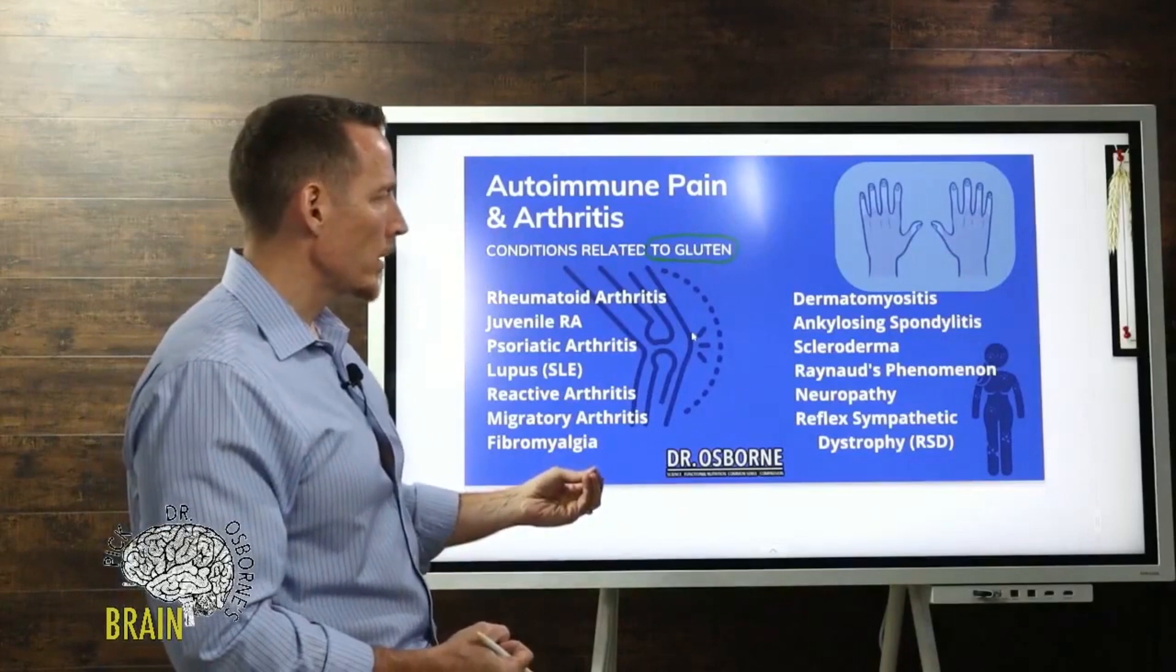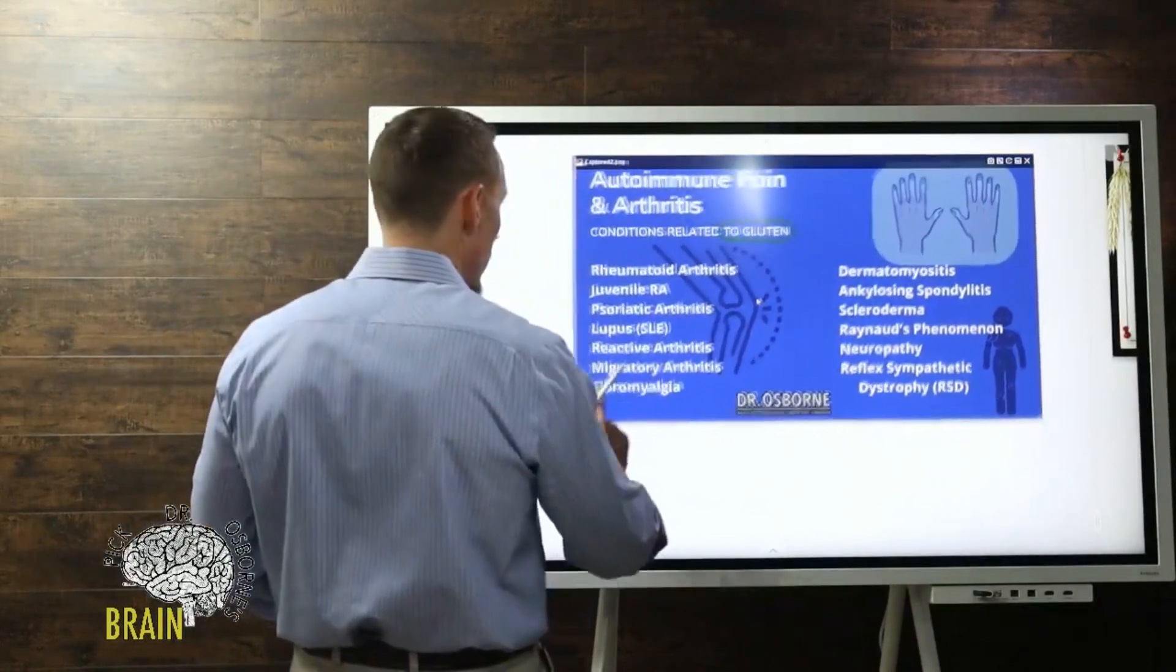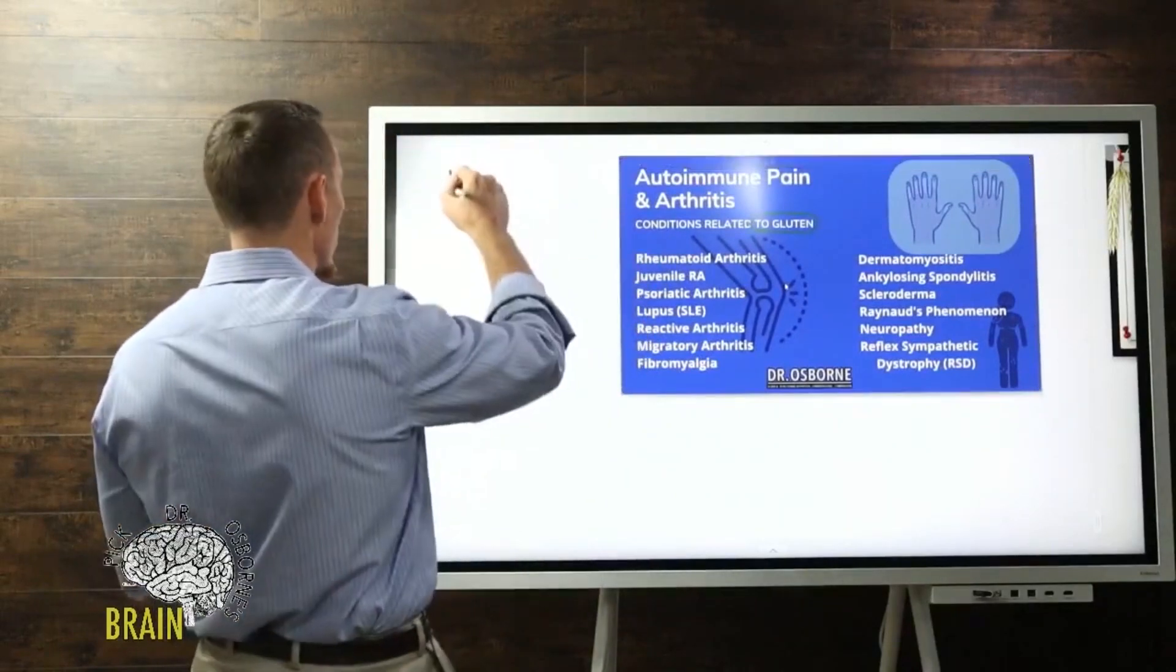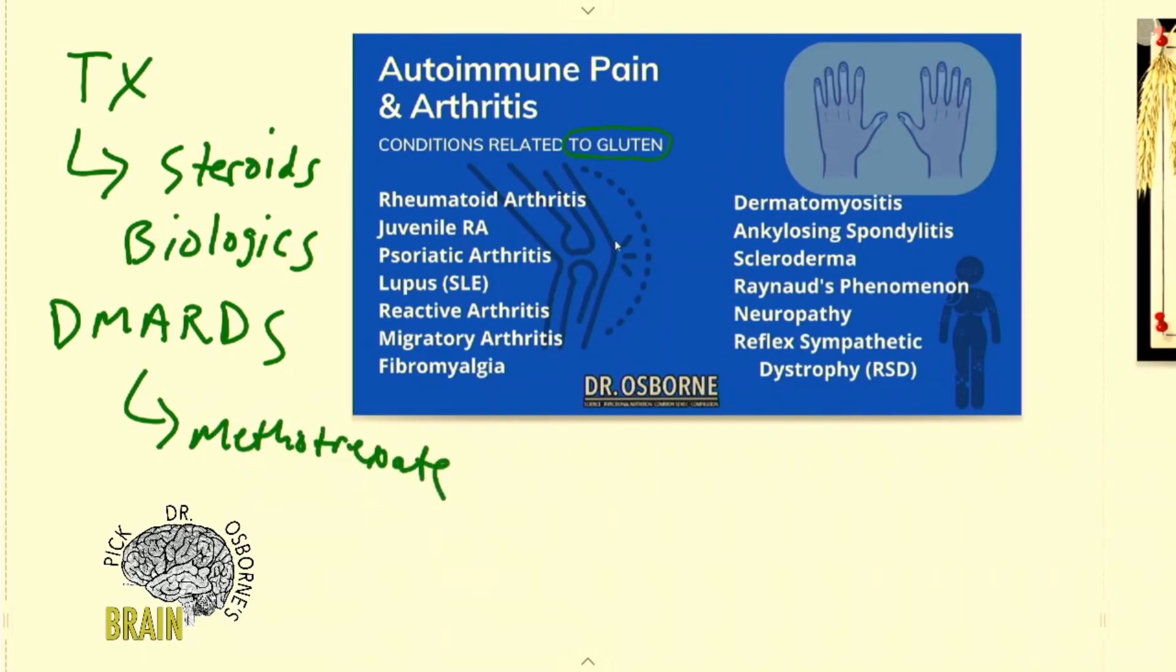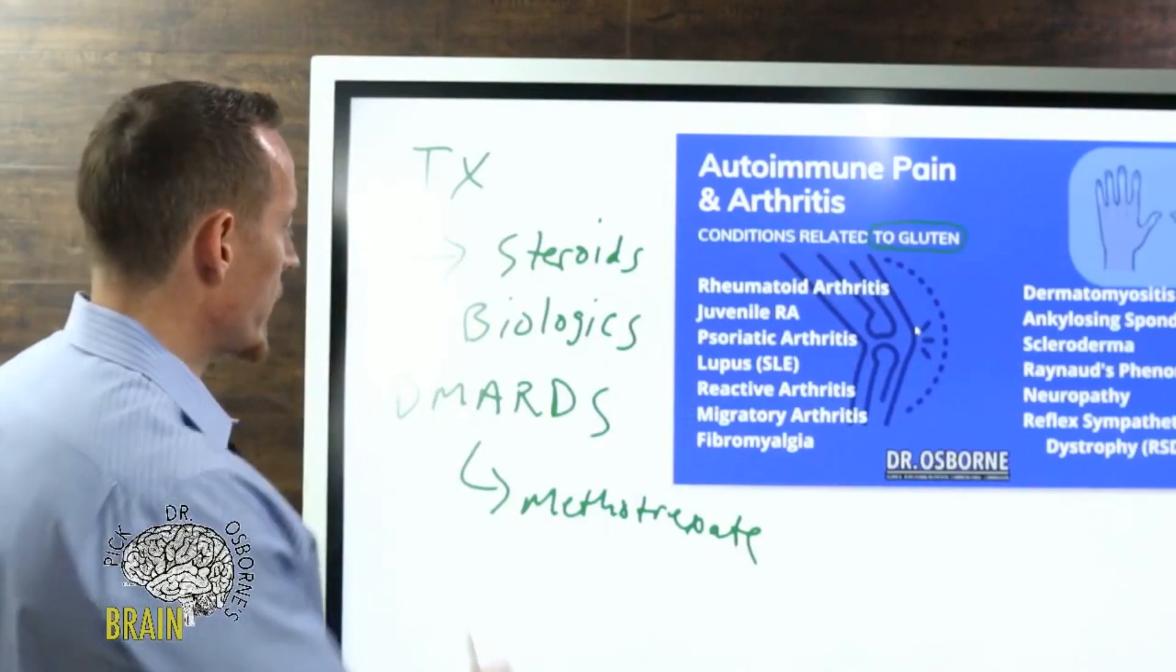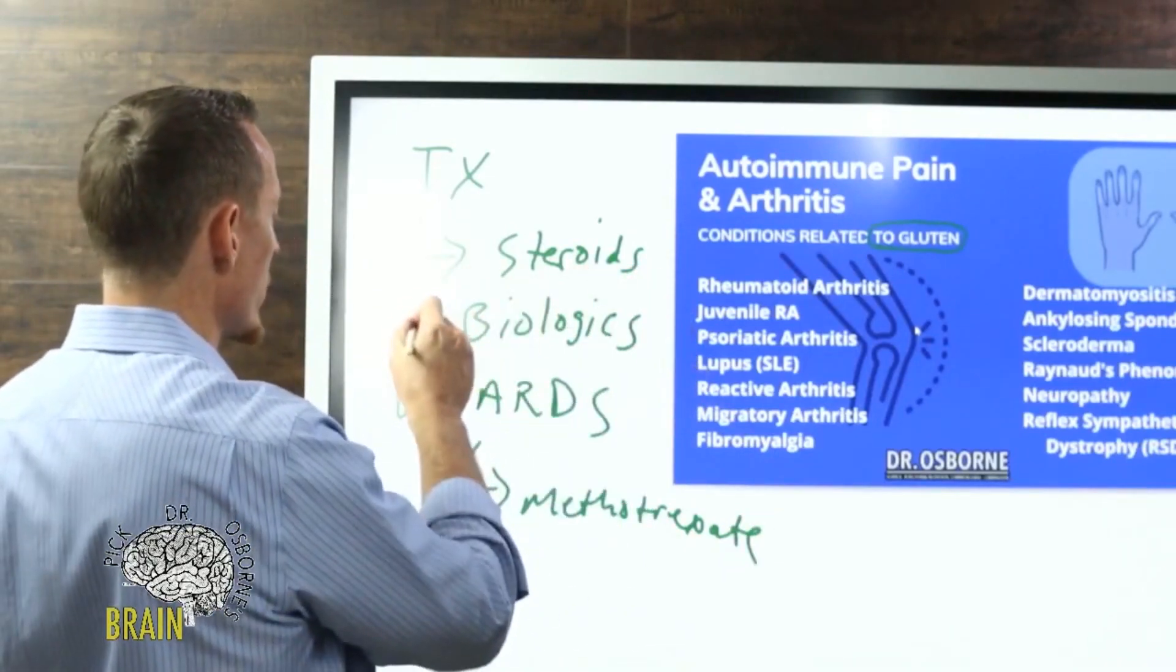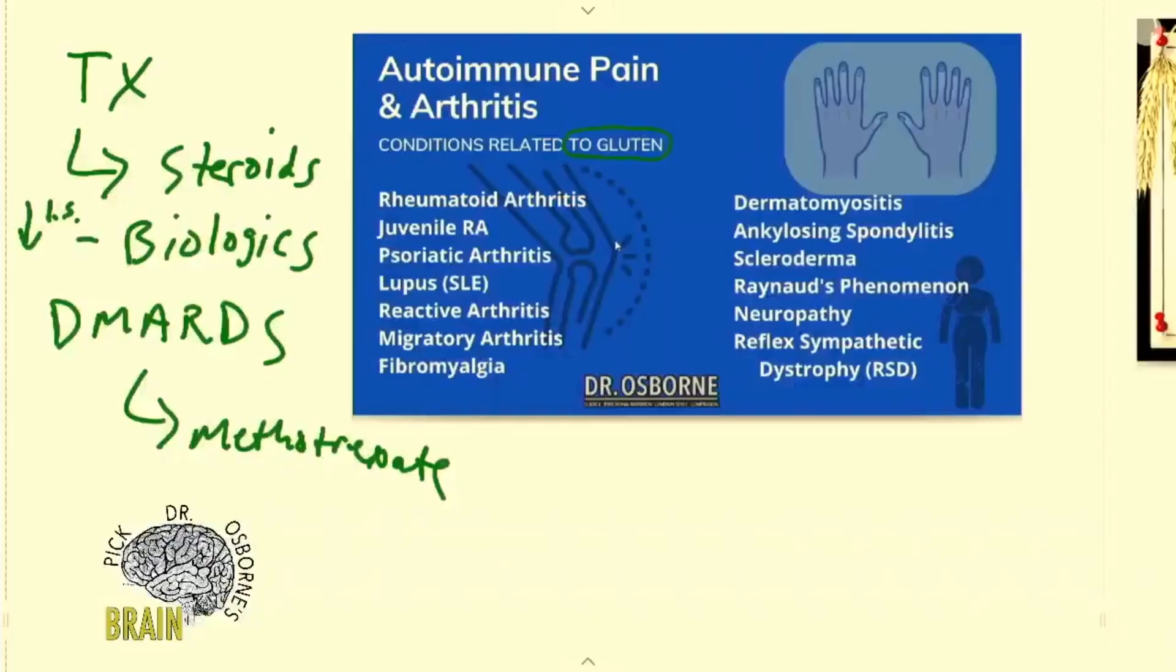How do doctors treat this? Treatment is typically steroids or biologics. In some cases, DMARDs - disease-modifying antirheumatic drugs - like methotrexate. This is pretty much what people get offered. We know methotrexate destroys the gut, steroids destroy the gut, and biologics destroy the immune system and increase your risk for infection and cancer. You're either left with these options to control your pain...